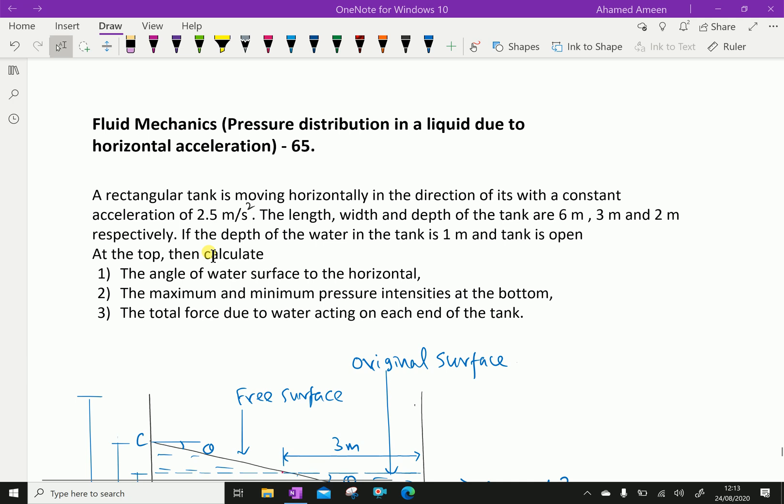If the depth of the water in the tank is 1 meter and the tank is open at the top, then calculate: the angle of water surface to the horizontal, the maximum and minimum pressure intensities at the bottom, and the total force due to water acting on each end of the tank.